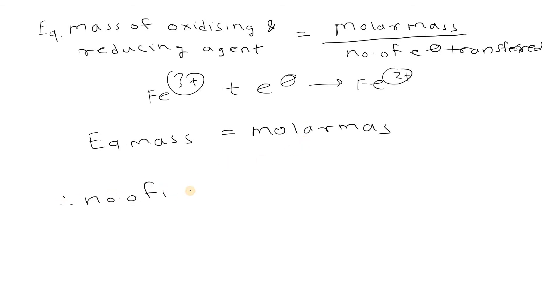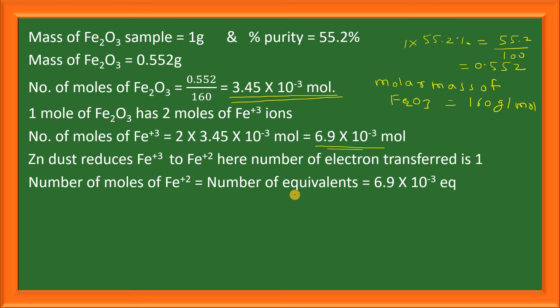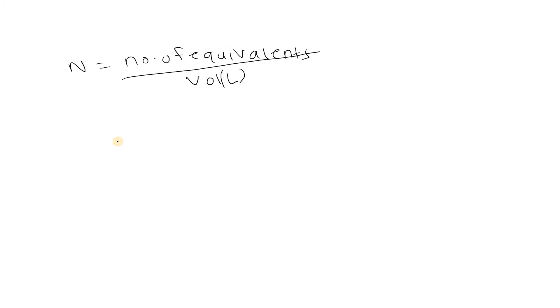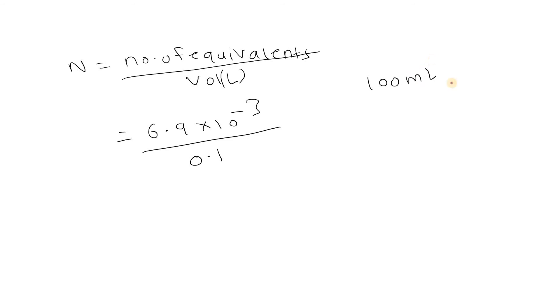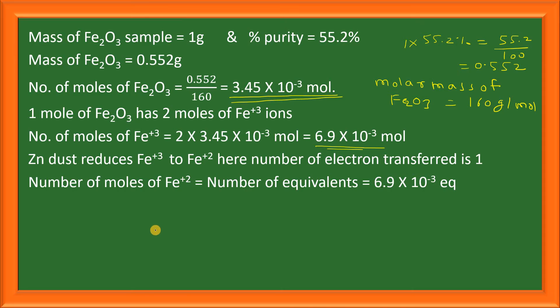Therefore, number of moles equals number of equivalents. Number of moles of Fe²⁺ equals number of equivalents of Fe²⁺, which is 6.9 × 10⁻³ equivalents. Normality equals number of equivalents upon volume of solution in liters. Volume of solution is 100 ml, which is 0.1 liter. Therefore normality of the solution is 6.9 × 10⁻² normal.